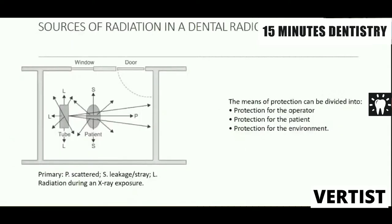Sources of radiation in the dental department: primary radiation comes directly out from the PID of the X-ray tube. Scattered radiation comes from the objects that are irradiated. Stray radiation, or leakage radiation, comes from the X-ray tube housing other than the PID. We need protection for the operator, protection for the patient, and protection for the environment.